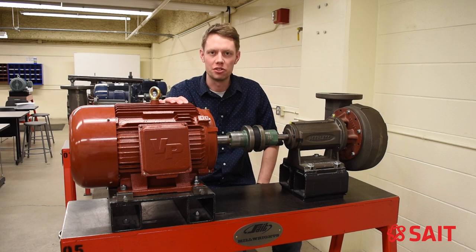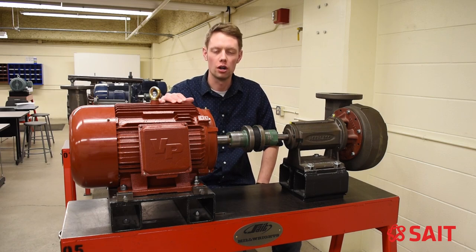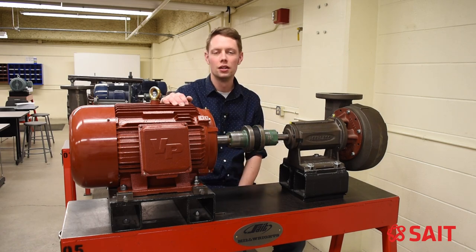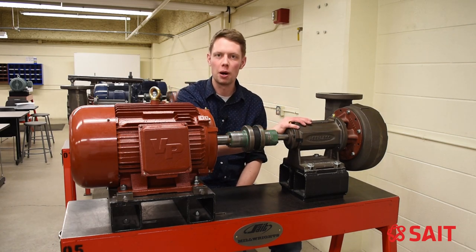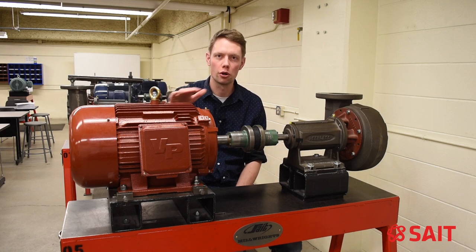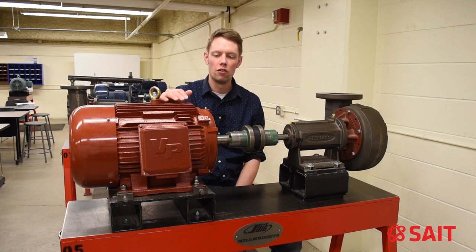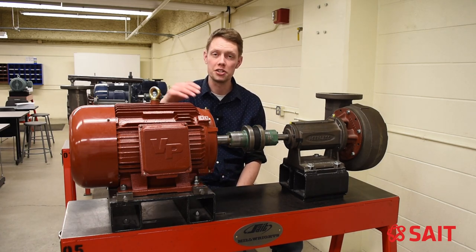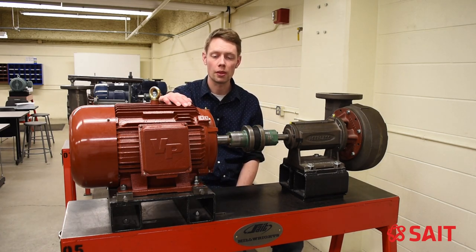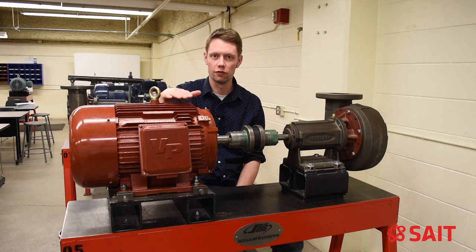So this is one of our alignment stands here at SAIT we use for training our millwrights. The principle and idea of this setup is we have our fixed pump here and we are trying to align the motor to the pump. Vertically, the way that is done is by using those shims and placing them underneath the feet to create an accurate position vertically.